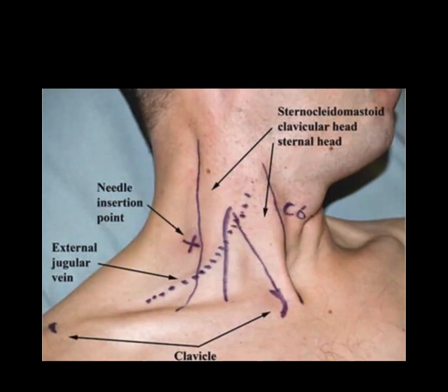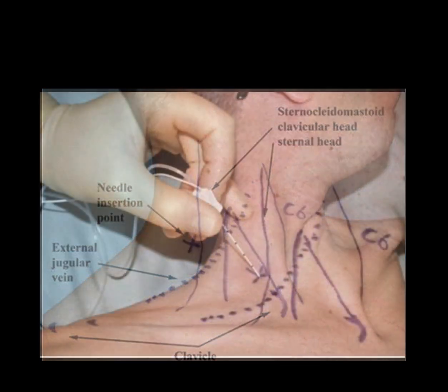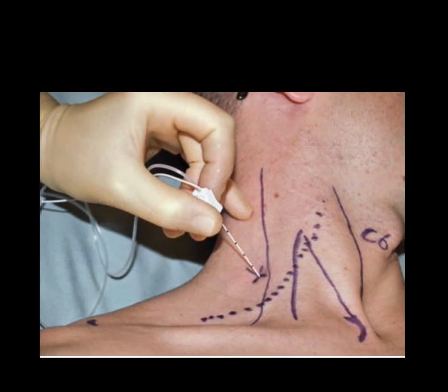This surface anatomy image shows the two heads of the sternocleidomastoid muscle, the level of the C6 vertebrae and Chassaignac's tubercle, the clavicle, the external jugular vein, and the needle insertion point for the interscalene block. The needle is inserted in the interscalene groove towards the C5 and C6 roots.